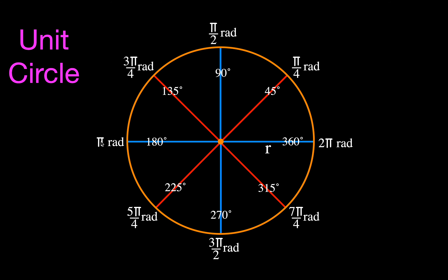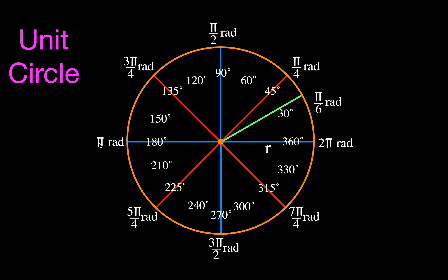For 45 degrees, just remember it's a quarter of pi. Now for the 30 and 60 degree series: 30 is one sixth of 180 because 30 times six is 180. So 30 degrees is one sixth of pi, which means the radian measurement for 30 degrees is pi over six. To get to 60 degrees I need two pi over six, which reduces to pi over three. So 60 degrees is pi over three radians.